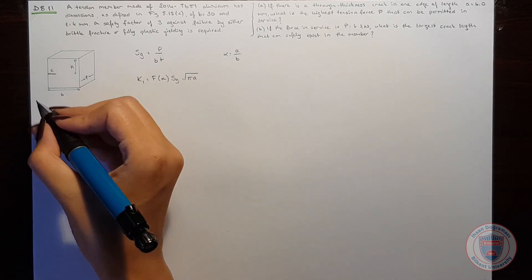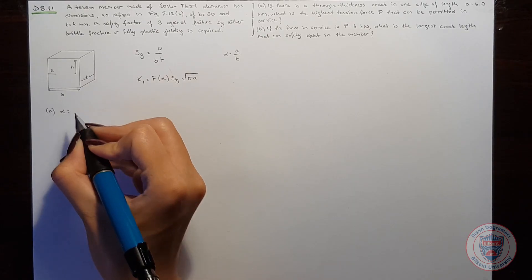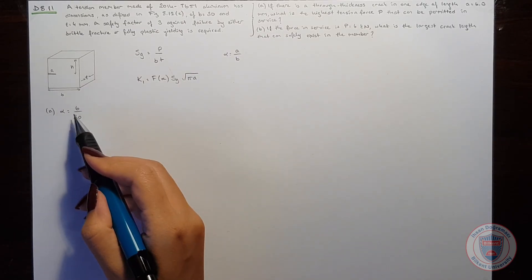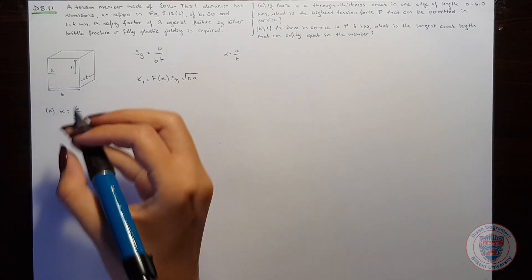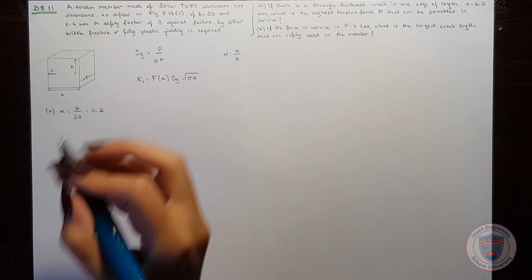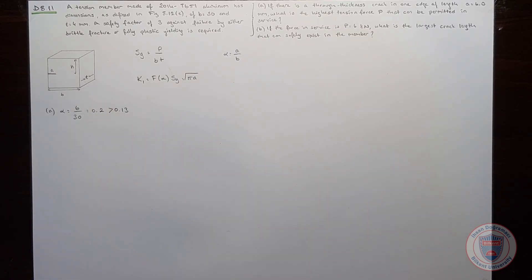Let's move to part A. We know that our alpha is equal to 6 over 30 for a crack length of 6 mm, and it is equal to 0.2 which is larger than 0.13. Since it is larger than 0.13, we have to calculate the form factor from an equation.